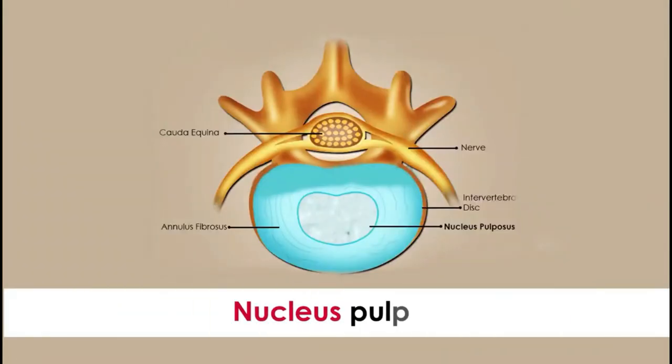Suppose you imagine if our vertebral body were made up of a single bone, then you would be very stiff — you can't bend forward or back. What has God done? Our vertebral column is made up of a number of small bones; each bone is known as a vertebra. In between two vertebra, we have a cushion-like material known as a disc or intervertebral disc. It has an overlying layer like leather over a cushion, and the center portion is known as the nucleus pulposus, which is like cotton within a cushion.